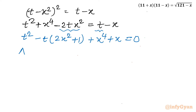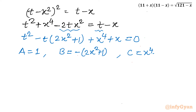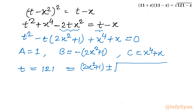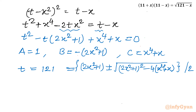This is a quadratic in t, where the coefficient A = 1, B = −(2x² + 1), and the constant C = x⁴ + x. Applying the quadratic formula, t = [2x² + 1 ± √((2x² + 1)² − 4(x⁴ + x))] / 2.